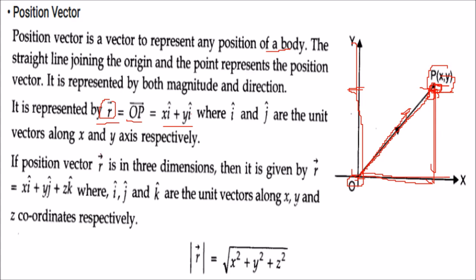If a position vector R is in three dimensions, you can extend it to xi plus yj plus zk. And if you want to find out the magnitude of this R, it will be the square root of x² + y² + z².